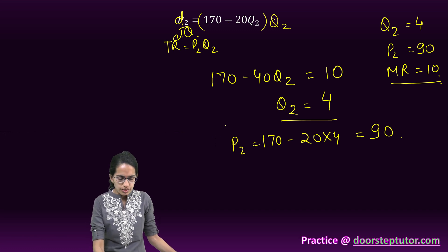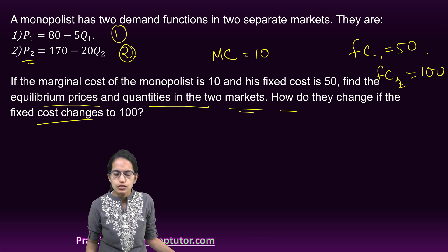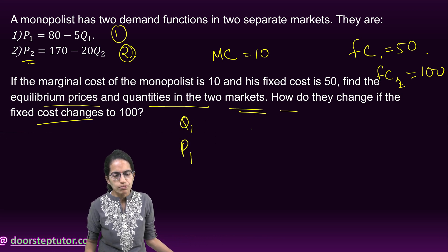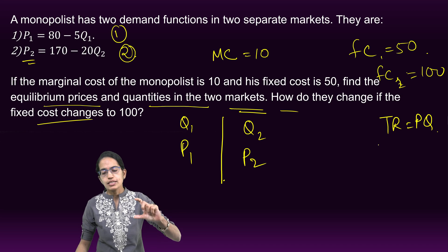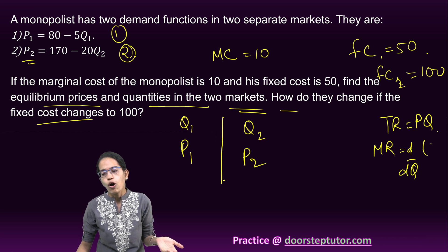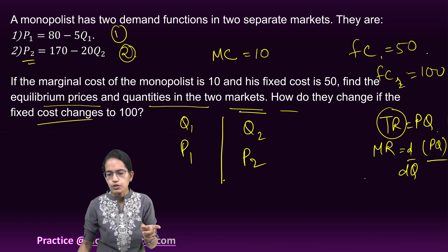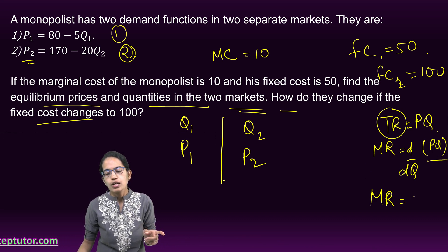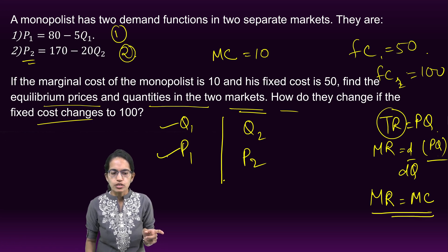We have now calculated the equilibrium price and quantities in both markets. Q1 = 7, P1 = 45, Q2 = 4, P2 = 90. This used the fact that total revenue is price × quantity, marginal revenue is d/dQ of PQ, and at the profit-maximizing point, marginal revenue equals marginal cost.